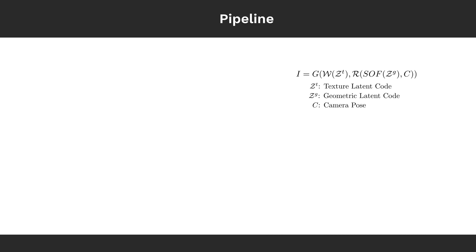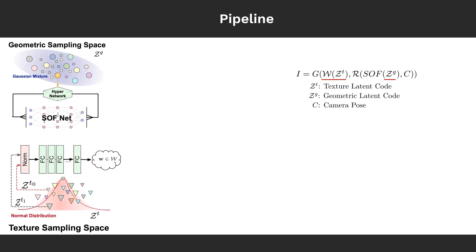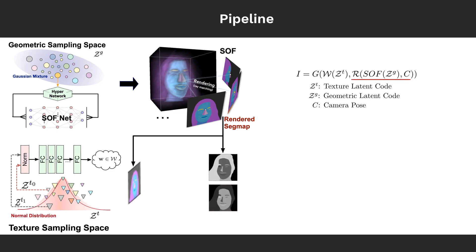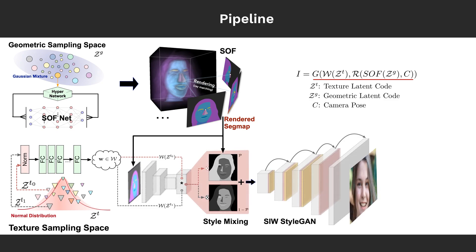We first sample latent vectors from the geometry and texture spaces. Then we use the scene representer to encode the latent shape vector as a semantic occupancy field. Furthermore, we render three viewpoint segmentation maps by casting rays to the scene. Finally, we adopt a semantic instance-wise module, or sieve module, to regionally stylize the semantic segmentation maps.